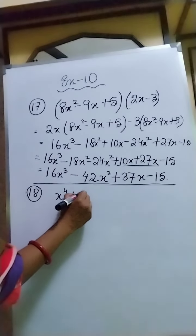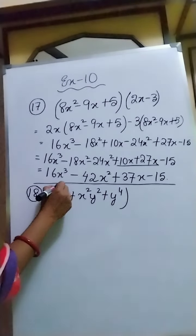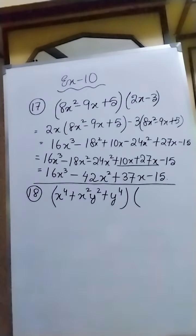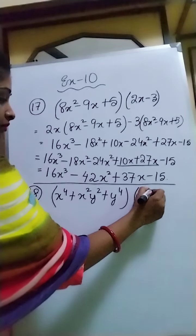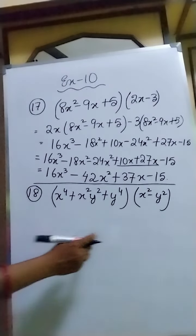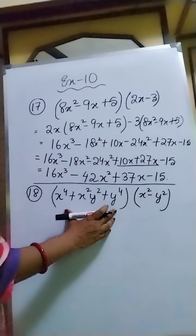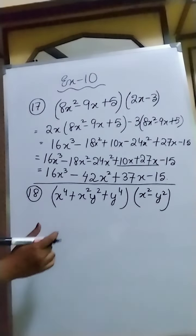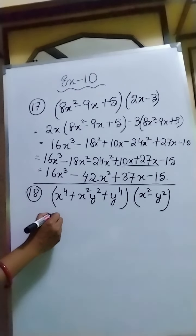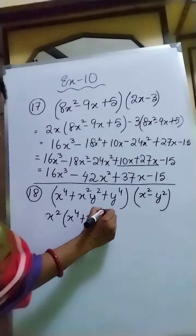Now we will solve sum number 18. In sum number 18, it is given that x to the power 4 plus x squared y squared plus y to the power 4, and you will multiply this with x squared minus y squared. Once you will multiply x squared with this whole expression, and then minus y squared also with the whole expression.